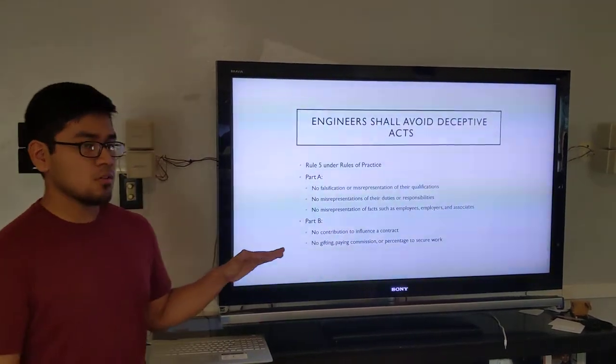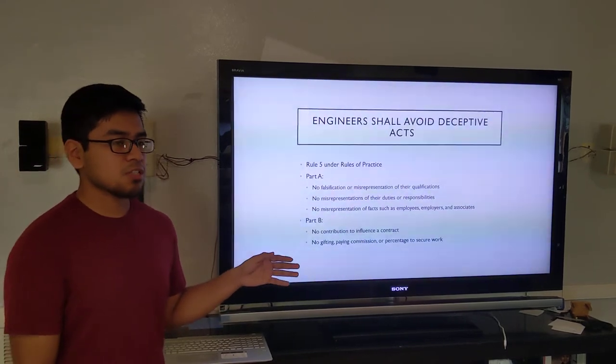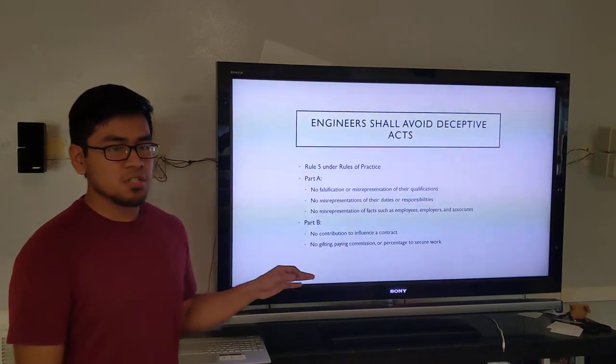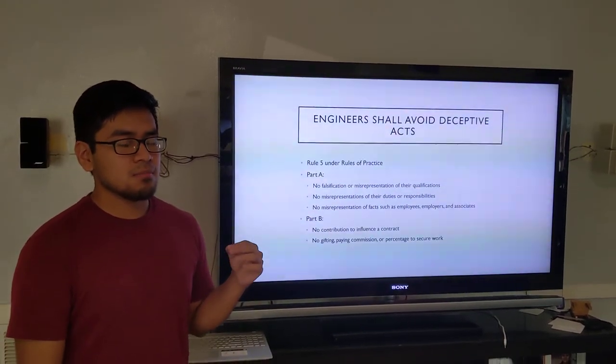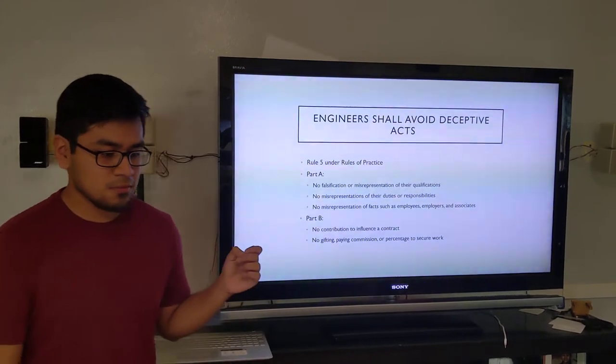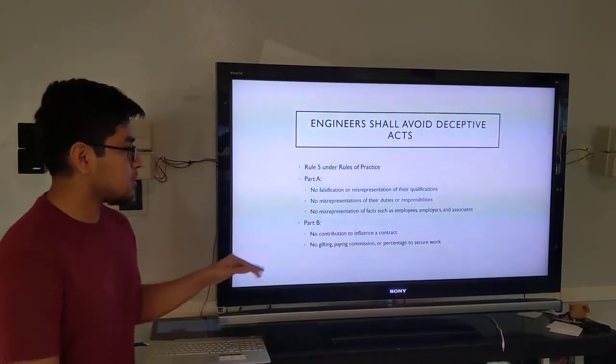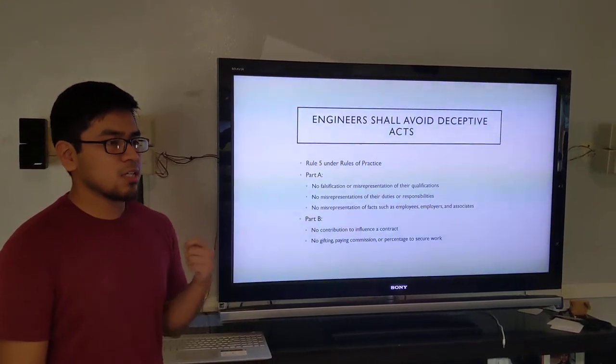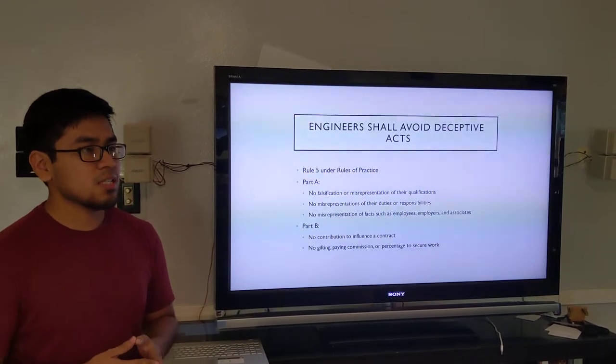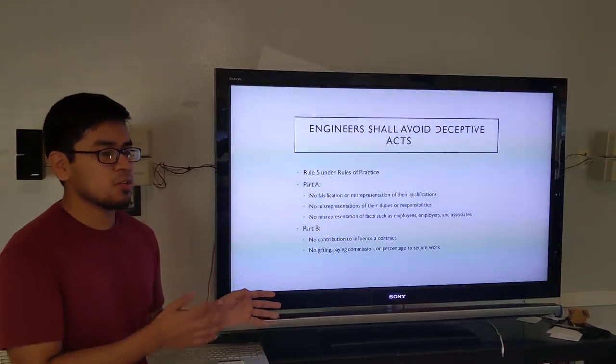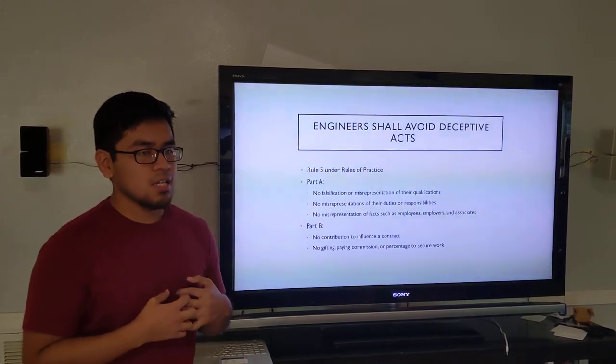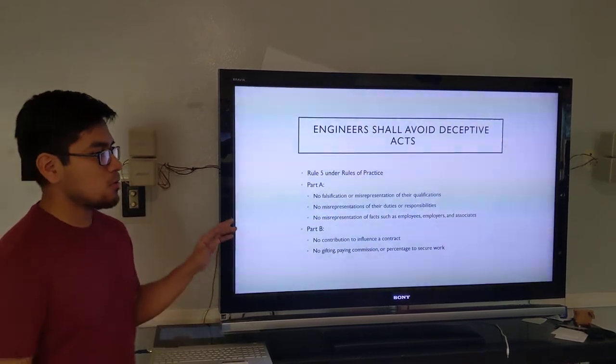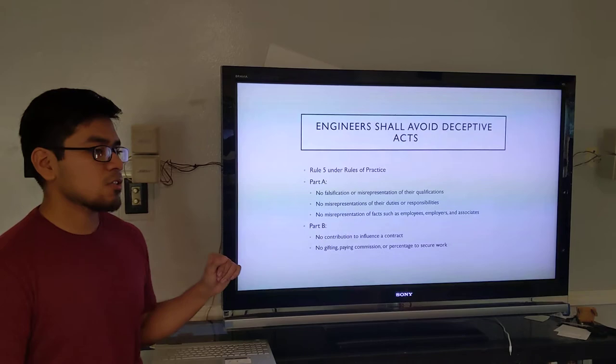Now, this also ties in with another rule, which is in the professional obligations rule number five, which says engineers shall not receive any economic type of influence. So part B here talks about the engineer not giving any commission, and rule number five of professional obligations talks about not receiving any type of monetary influence. So these two rules together really work together to ensure that there's no bribing happening when doing engineers.